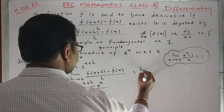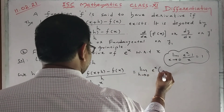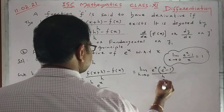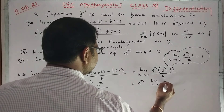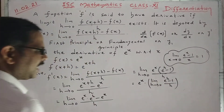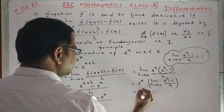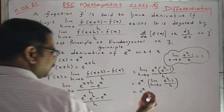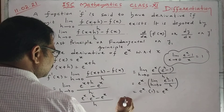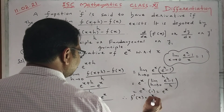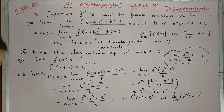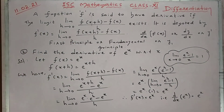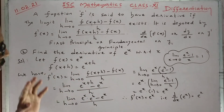Since e^x does not depend on h, it can be kept outside the limit: e^x · limit h→0 of (e^h - 1)/h. Using the standard limit, this equals e^x · 1 = e^x. Therefore f'(x) = e^x, that is d/dx of e^x = e^x. The derivative of e^x with respect to x is e^x only. And the derivative of x with respect to x is 1.